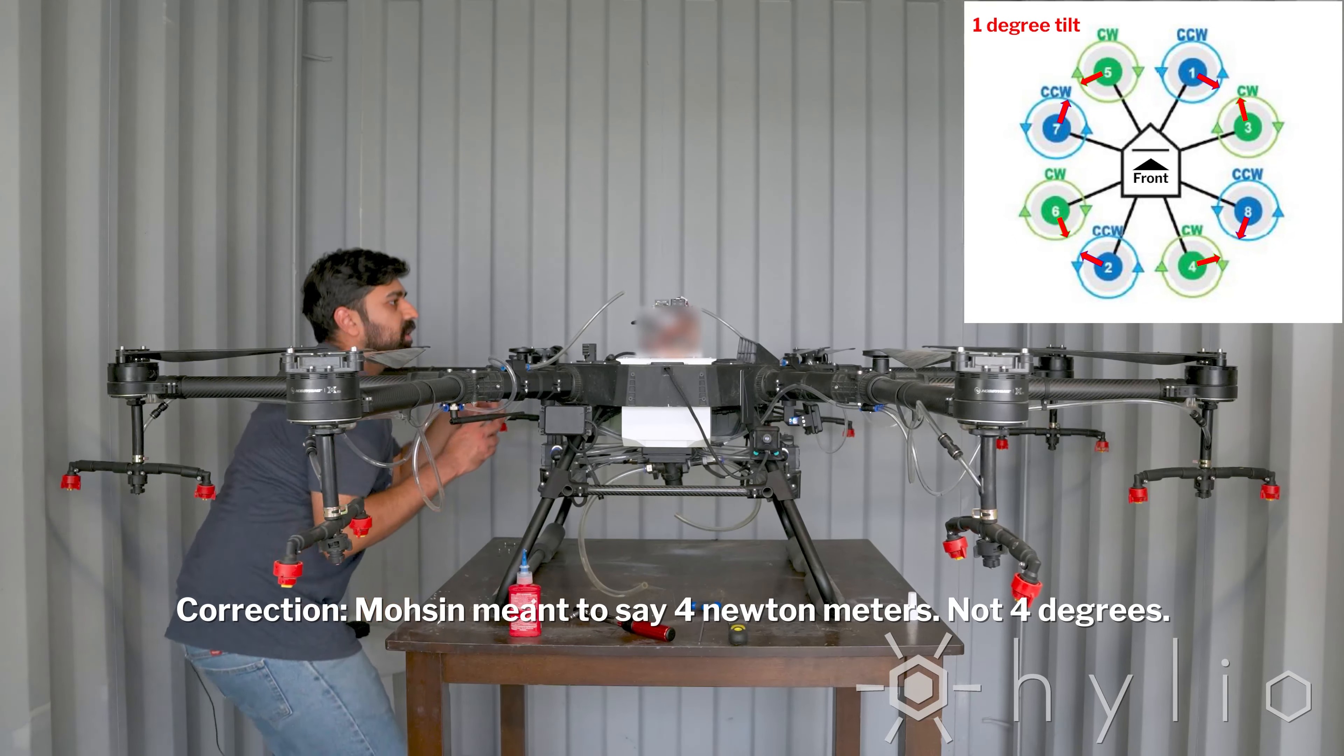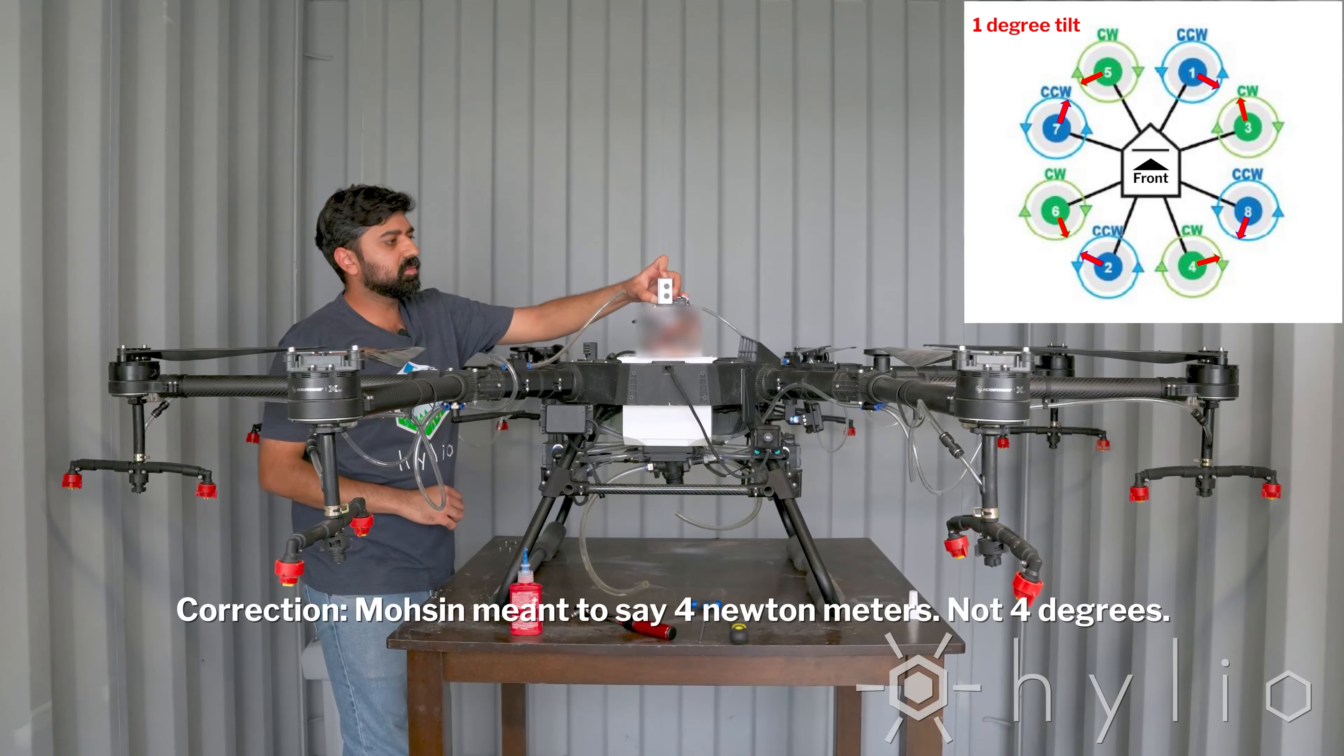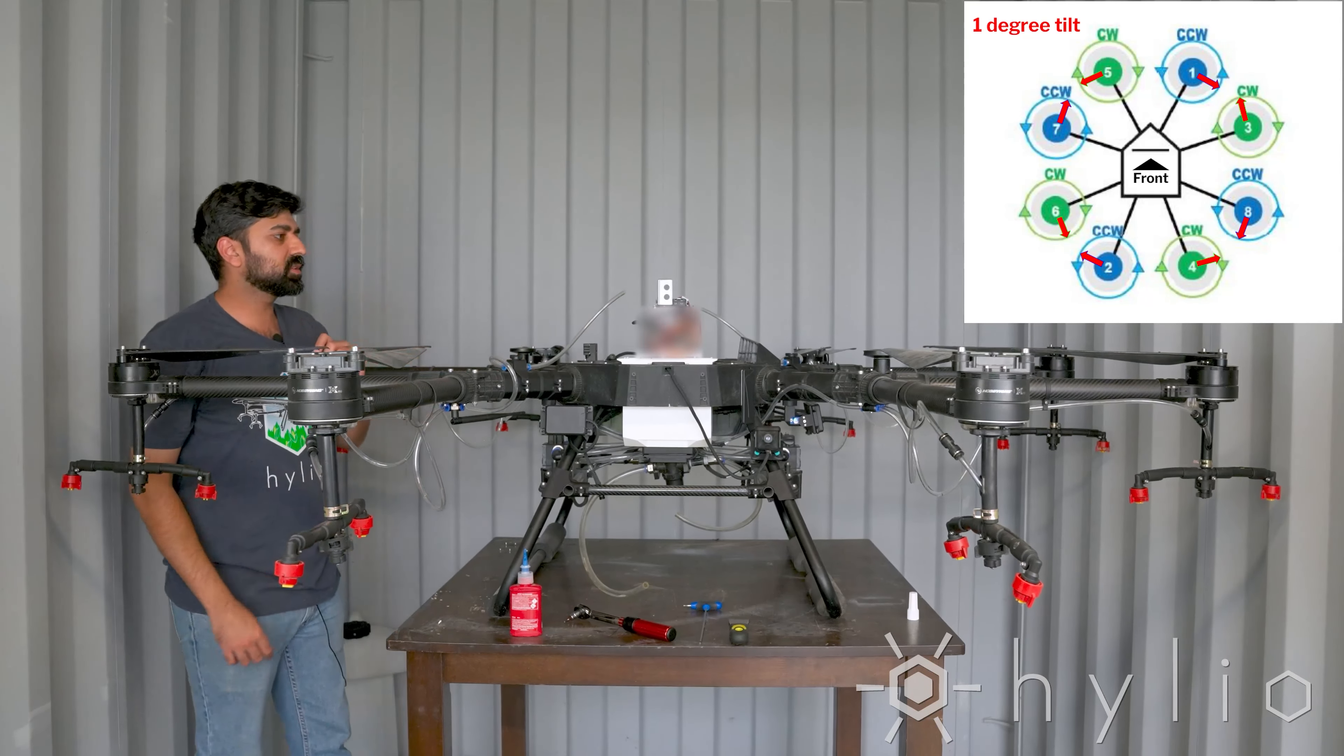We're going to place our level here. Make sure it's flat. Zero it out. And this time we are leveling motors three and motor eight.